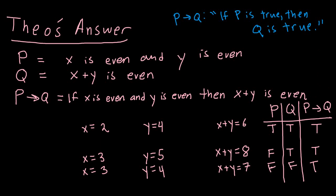Here we've replicated three rows of the truth table. But there's one row we haven't gotten yet: true implies false, which is false. No matter what X and Y you come up with, you'll never find values where X and Y are both even but X plus Y is odd — because we know the sentence 'if X is even and Y is even, then X plus Y is even' is true.